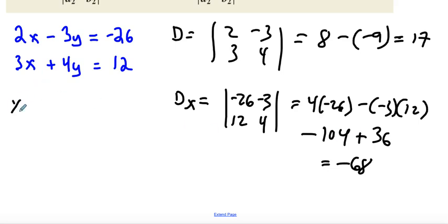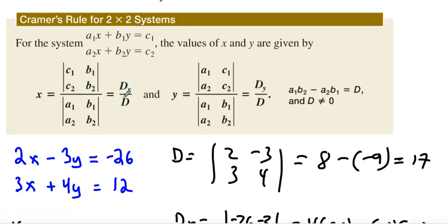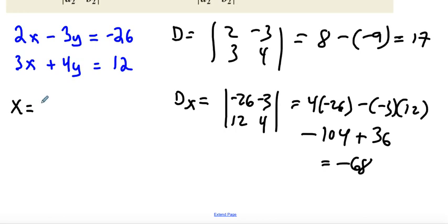So if we wanted to find x right now, what is x? If we look back up here, x is d of x over d. So if d of x is negative 68, d is 17. So if we did that right there, that would give us negative 4. There it is. So that's how you find our x value.